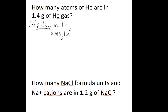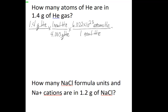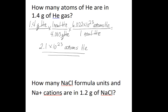Grams will cancel here, leaving you with moles. And then you can say that you have 6.022 times 10 to the 23rd atoms of helium in 1 mole of helium. So moles of helium cancel out, and when you do the math to the correct number of significant figures, you'll get 2.1 times 10 to the 23rd atoms of helium.